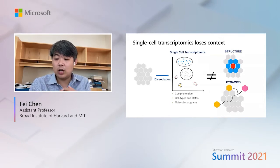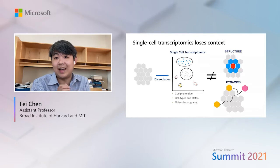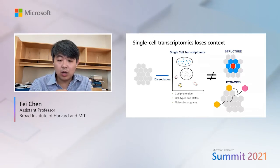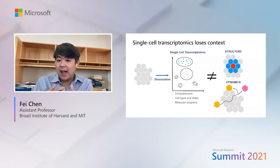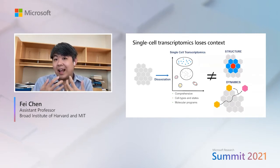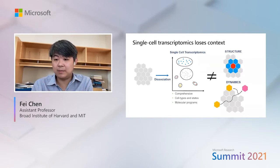Beyond that, cells and tissues are also dynamic — they divide, they migrate, and they differentiate. We lose not only the spatial context but also the temporal context when we take these snapshots of tissues. This motivated our group to ask: how do we make measurements about the molecular programs of cells while still maintaining the spatial context?